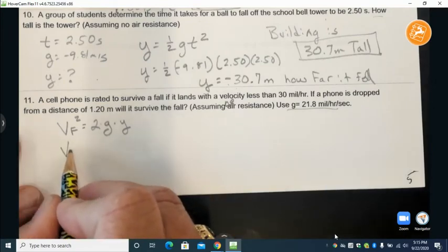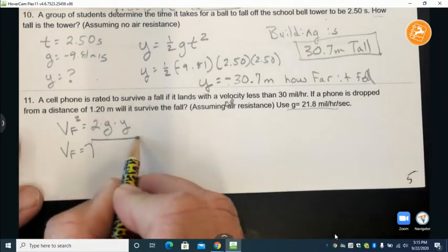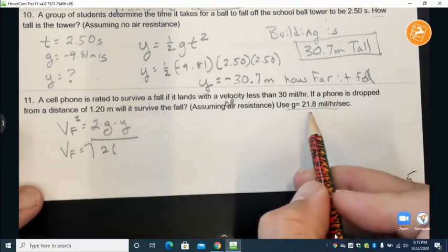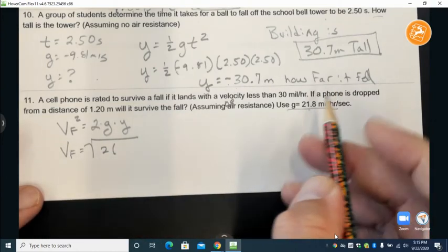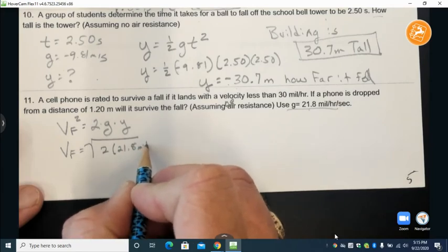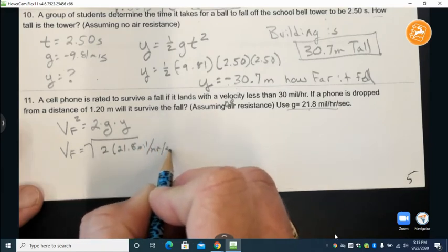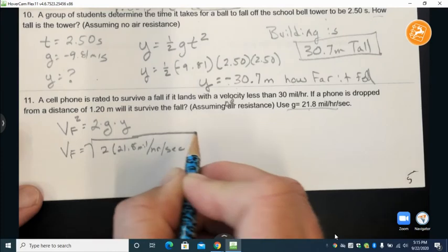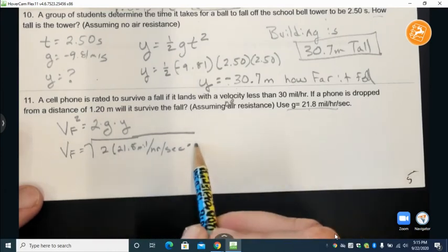So the final velocity object is going to equal the square root of two times gravity. Now we're going to use this for gravity miles per hour, twenty one point eight miles per hour per second, and so then we need to multiply that times our height.